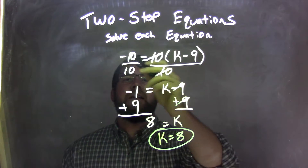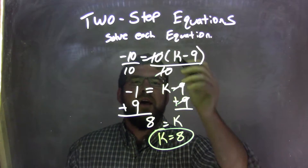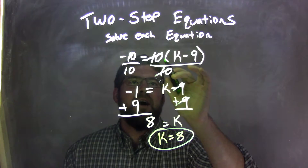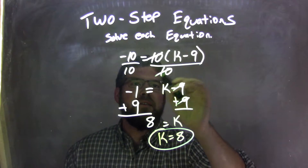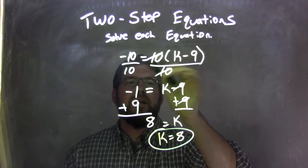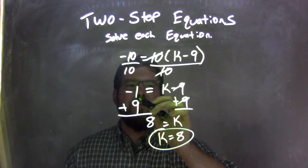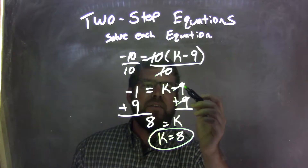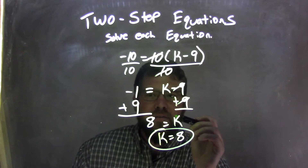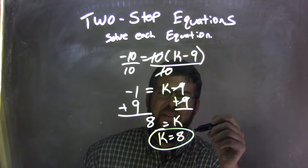So let's recap here. Negative 10 equals 10 times k minus 9. If I divide by 10 on both sides — that's my first step — the 10 times the parenthesis divided by 10 cancels, leaving me k minus 9 on the right. Negative 10 divided by 10 is negative 1. I then have a minus 9, so I add 9, which is the opposite, leaving me k. And negative 1 plus 9 is a positive 8.